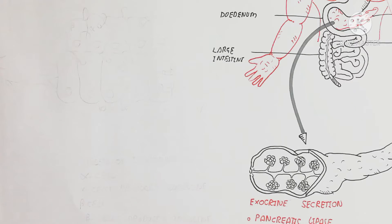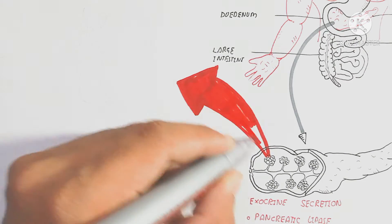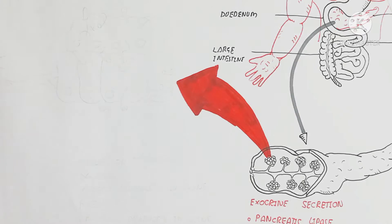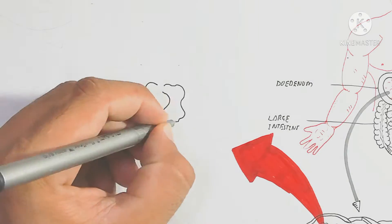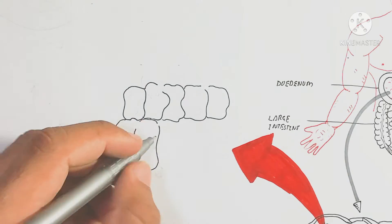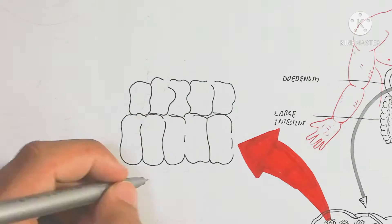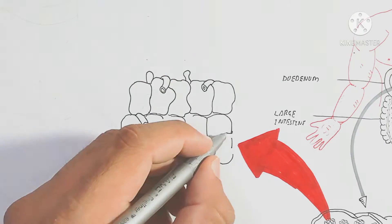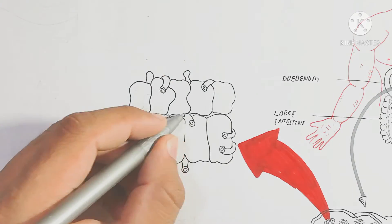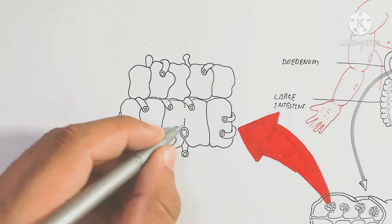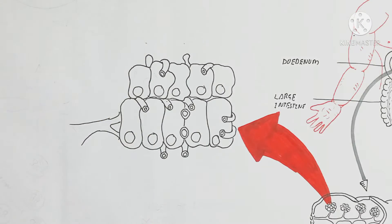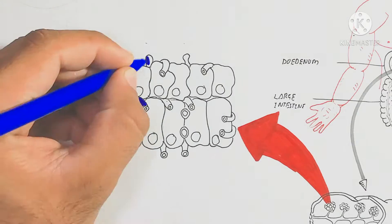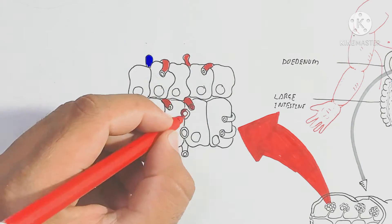Insulin is used for anabolism, glucagon is used for catabolism, and somatostatin is used for growth factor regulation. On the exocrine side, pancreatic lipase is used for lipid digestion, and amylase is used for amylopectin and amylose digestion.